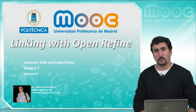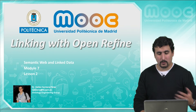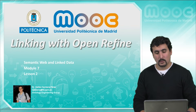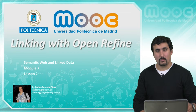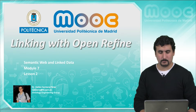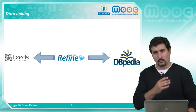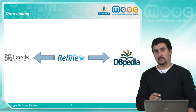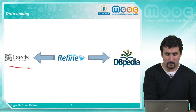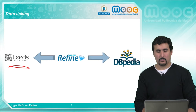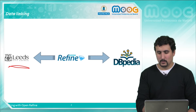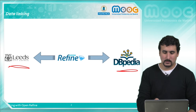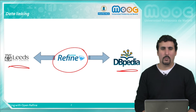Hi all and welcome to this second video of the module, in which we will talk about how to use the RDF extension of OpenRefine to carry out the linking process of our dataset. Recalling the previous example, our goal is to link information from the OpenData portal of the city of Linz to the DBpedia datasets using OpenRefine.